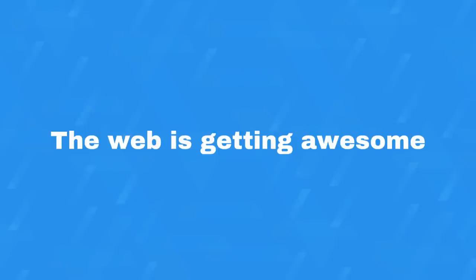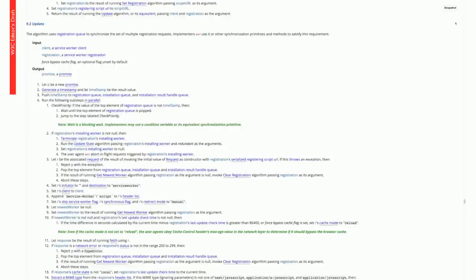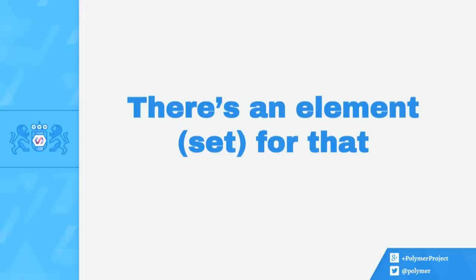The web is getting a lot of really cool features recently, and this is great for users, it's great for developers, and it's also great for businesses that want to do exciting new things without tethering themselves to a closed platform. But it's also getting complicated. There's a lot to learn now, and realistically you can't learn all this stuff anymore. These new features are actually so powerful because they're very deep. So what can we do about this? Well, luckily, there's an element set for that.